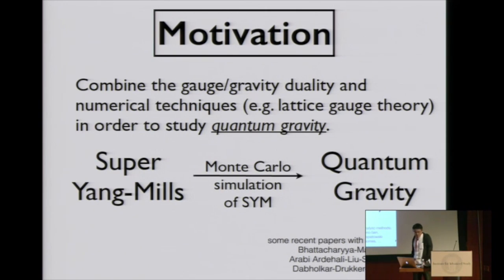Of course, very often it's very difficult to solve super Yang-Mills, especially when we want to know something which is not protected by supersymmetry like thermodynamics. Then, in such a situation, we should use numerical techniques or numerical experiments, such as lattice gauge theory, to solve this theory. And then we can say something about quantum gravity.